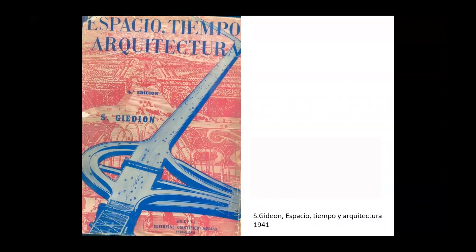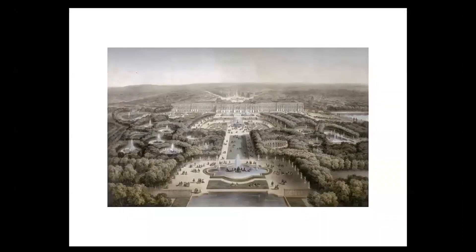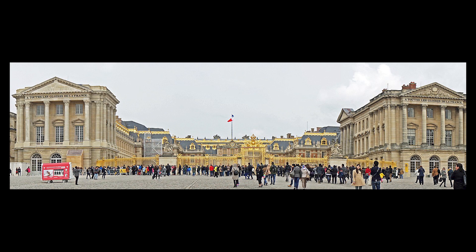Versalles es una máquina imperfecta, un edificio híbrido en términos actuales, una megaestructura avant la lettre, que alberga todo tipo de usos y cambios. Hoy es, ante todo, un espacio público cubierto por el que diariamente circulan unos 10.000 figurantes, paseantes, turistas.